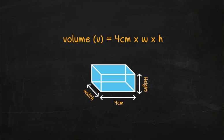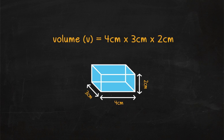This box is 4 centimeters long, 3 centimeters wide, and 2 centimeters high. To find the volume, multiply 4 times 3 times 2 which equals 24.